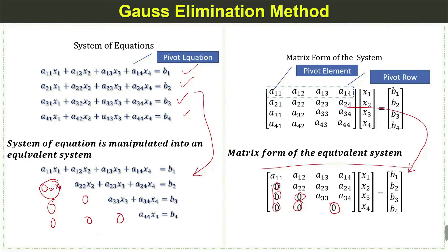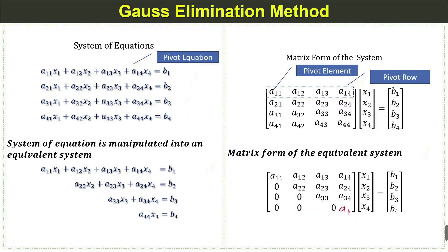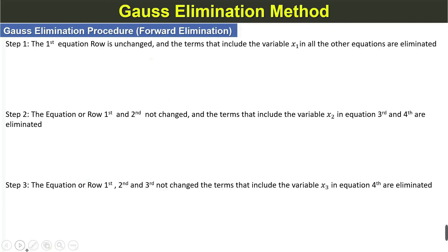We eliminate all elements that are below the diagonal elements of the matrix. Here the last element will be A44 — there is a typing error. So A44. This is the upper triangular matrix, the upper triangular form in which all elements below the diagonal elements are 0. Then we solve this by backward substitution.